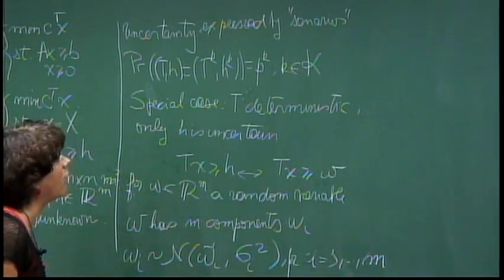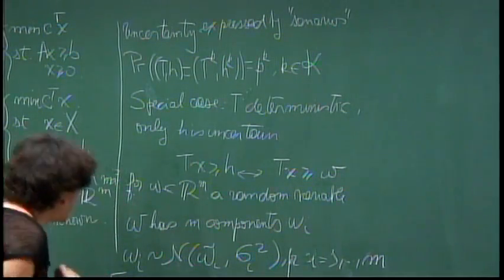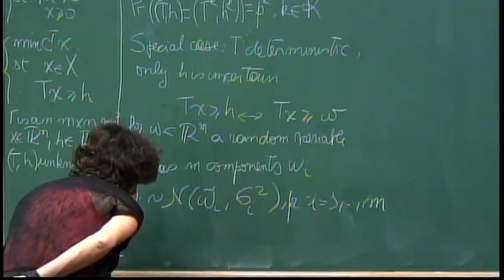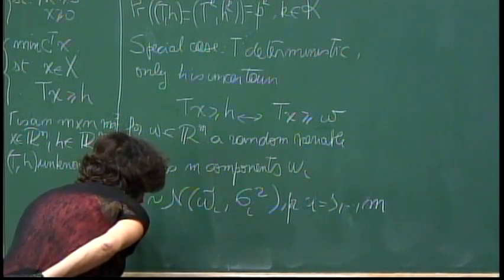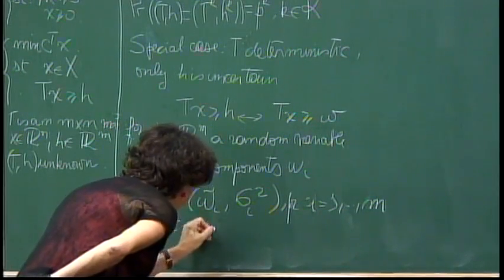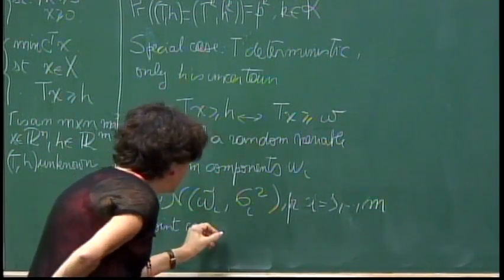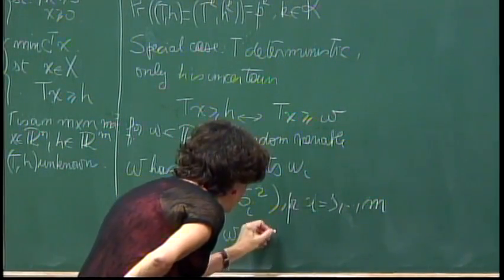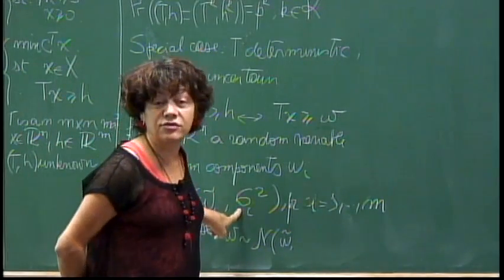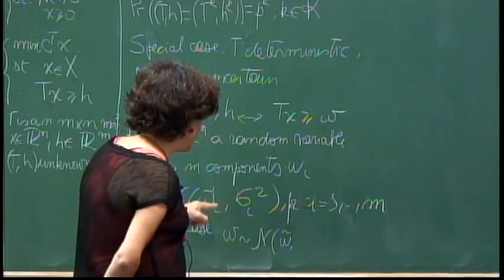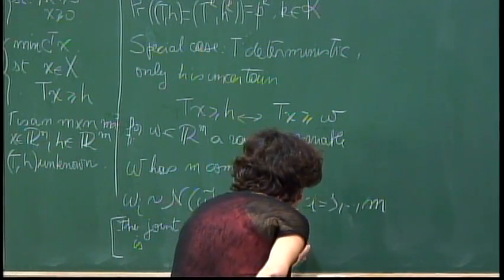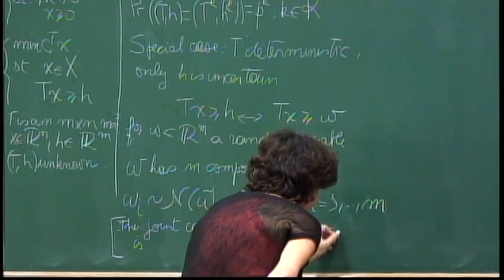I'll also write what it would look like if the components were not independent. In the joint case, ω as a vector has a normal distribution with some mean ω̃, and instead of having standard deviations, we would have a correlation matrix Σ, giving a multivariate normal with covariance ΣΣ^T.